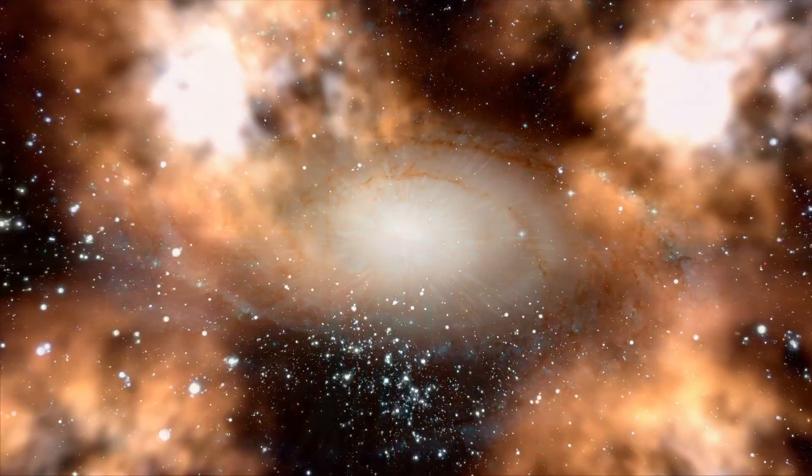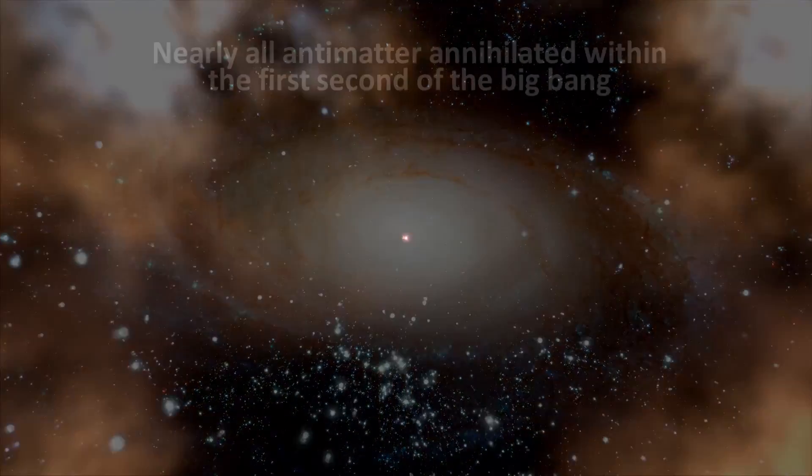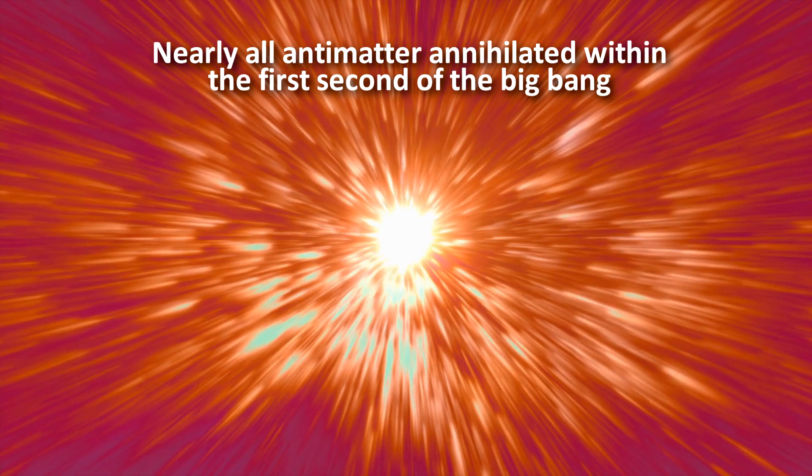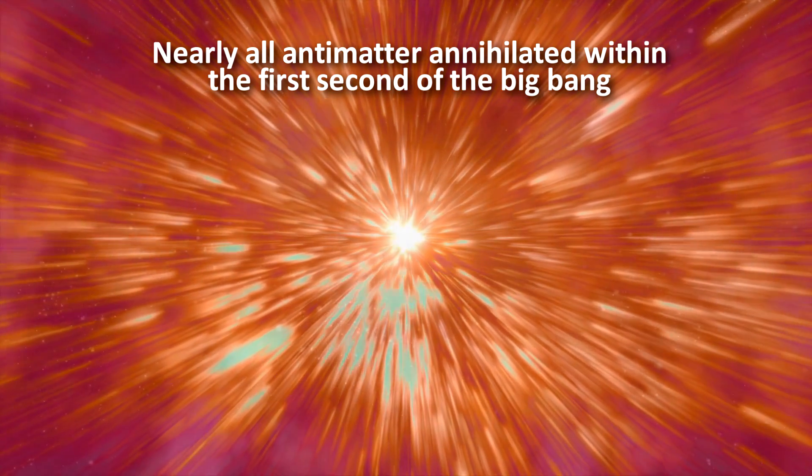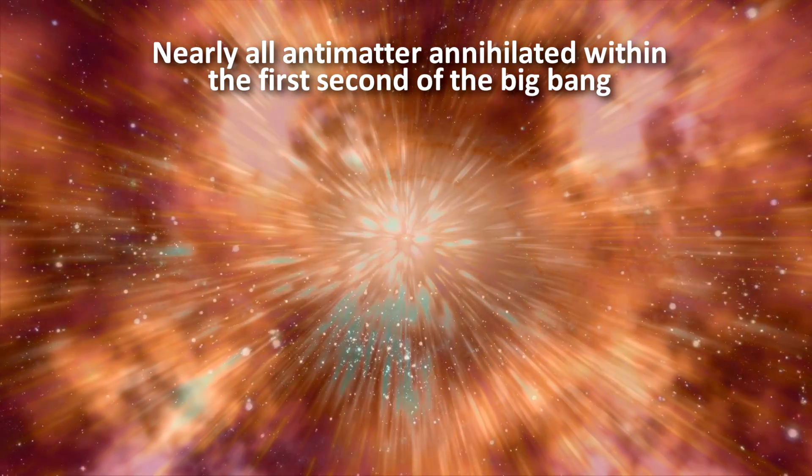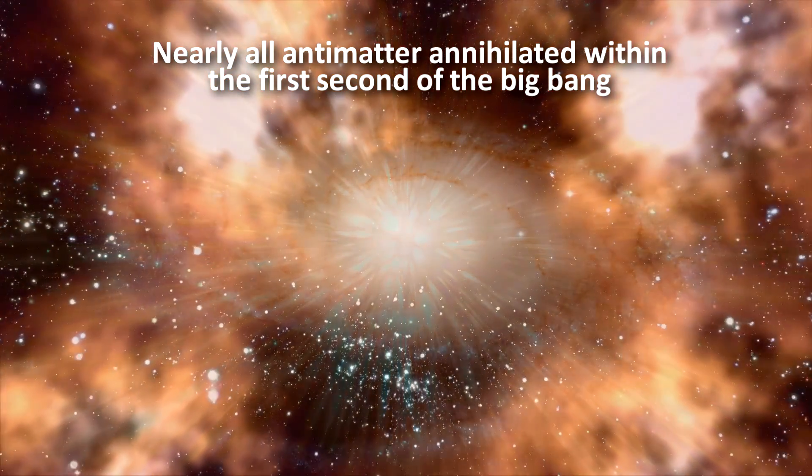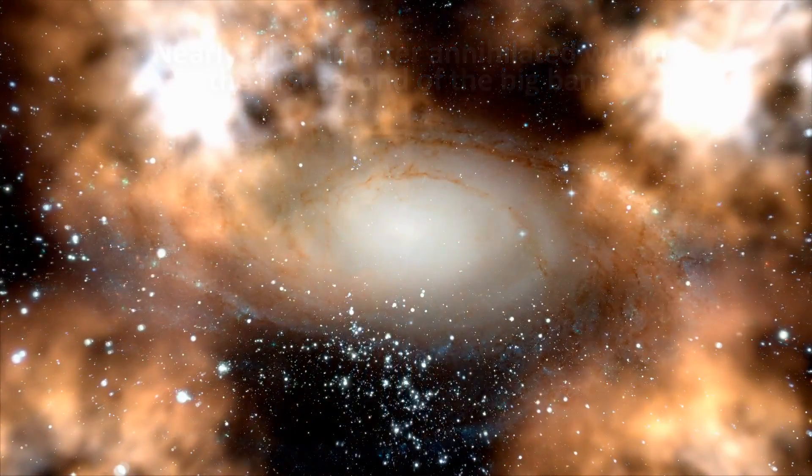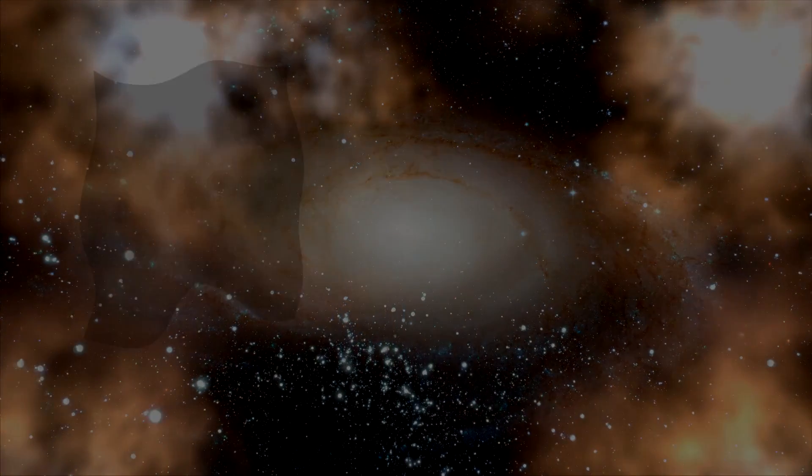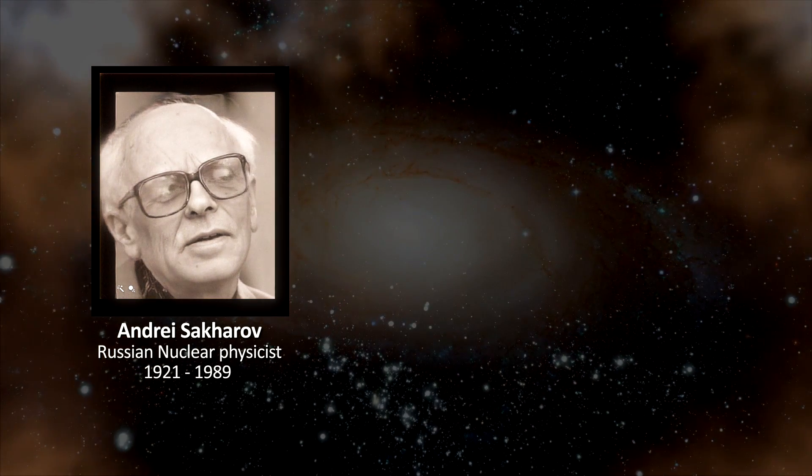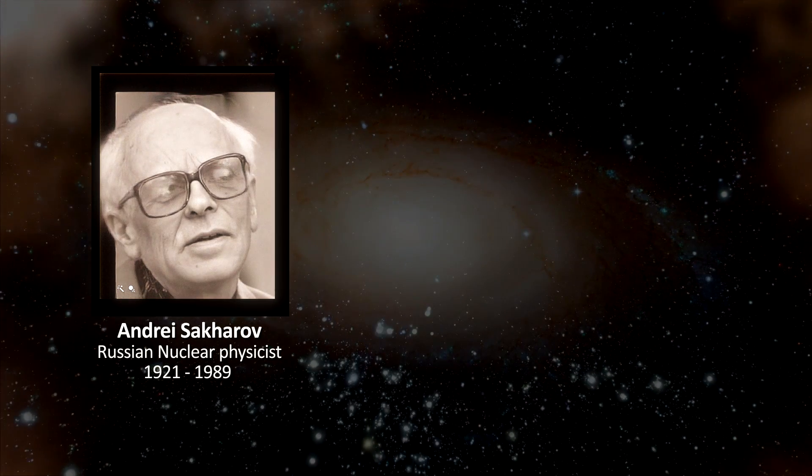13.8 billion years ago, when the universe was born, it was thought to have been matter-antimatter symmetric, meaning equal amounts of both. But within the first second of its existence, nearly all the antimatter in the universe annihilated. So something happened that either preferentially created matter or preferentially destroyed antimatter. What could have caused this? In 1967, Russian nuclear physicist Andrei Sakharov proposed that the universe must satisfy three conditions in order to create matter and antimatter at different rates.